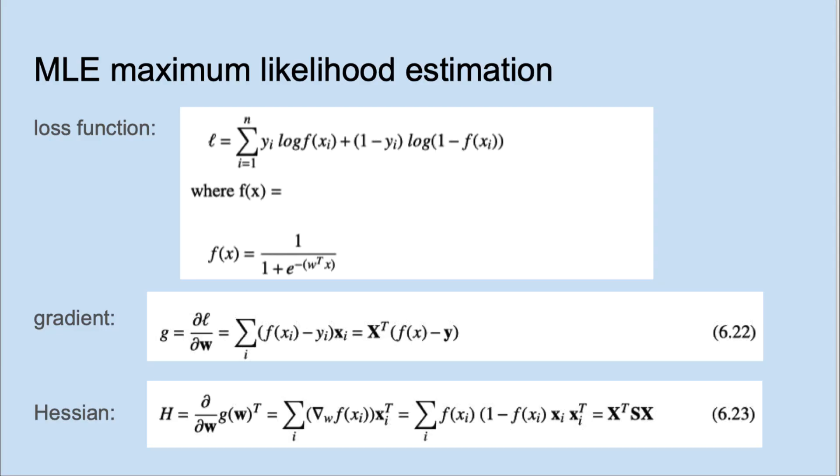To do that, the first derivative, the gradient, is used in some optimization algorithms. The second derivative, the Hessian, is used in others. Let's talk about gradient descent first.